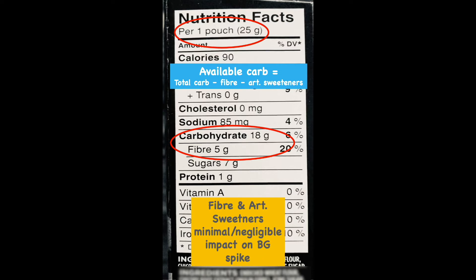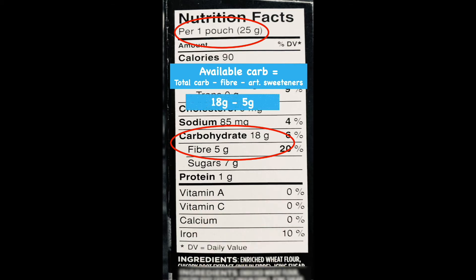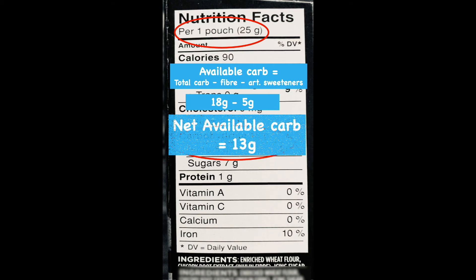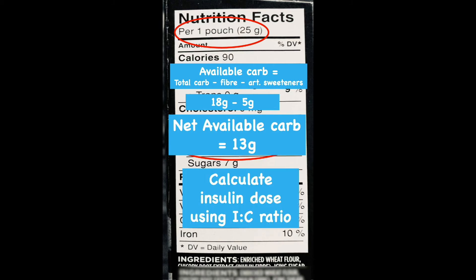We minus the fiber and artificial sweeteners because these have minimal or negligible impact on blood glucose spike. So we take the 18 grams minus the 5 grams and we're left with 13 grams of carbohydrate. If we know the insulin to carb ratio, we can then use the 13 grams to calculate the insulin dose.